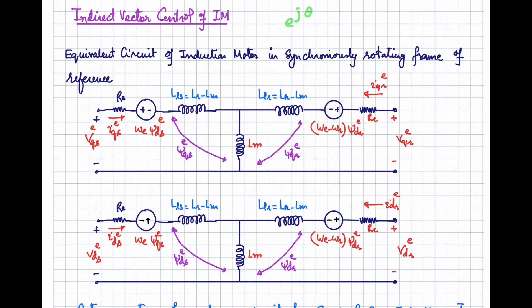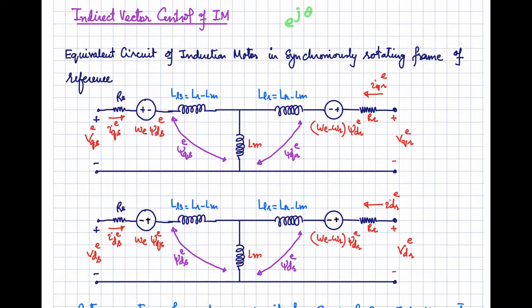In indirect vector control, we use the measured or estimated speed to determine and estimate the rotor flux, and we determine the unit vector from the rotor speed measured from the shaft. The key difference: in direct vector control we use voltage and current signals, whereas in indirect vector control we use the speed obtained from the shaft. For direct vector control, we have seen two methods for estimation of the rotor flux and unit vector in the last two videos.